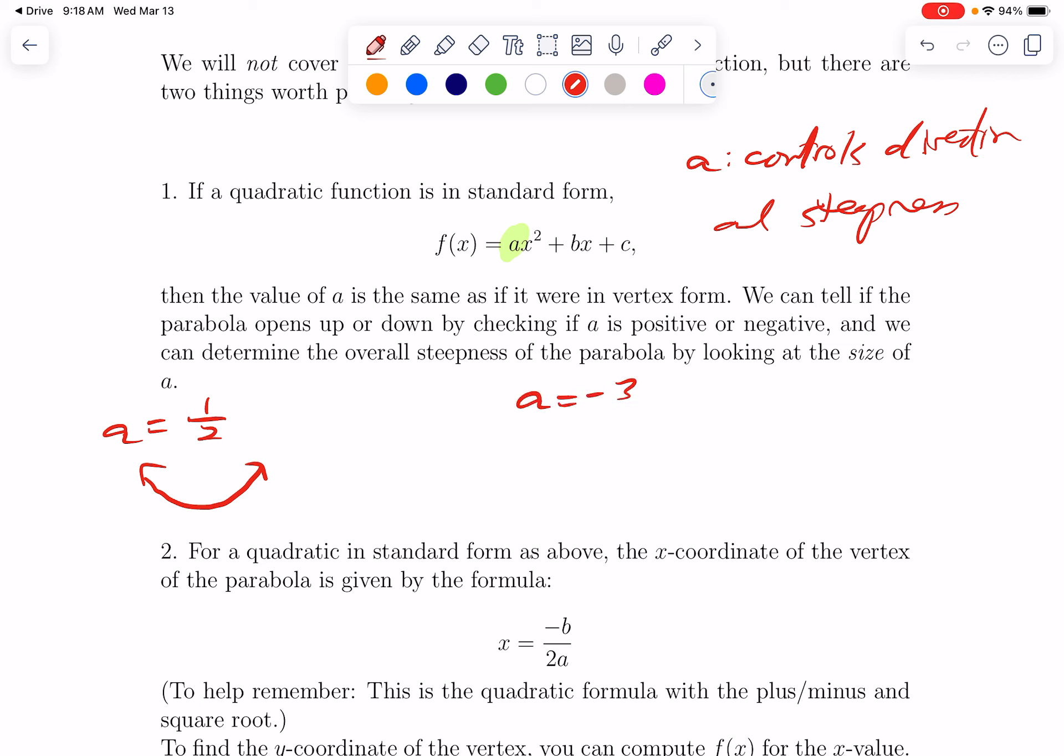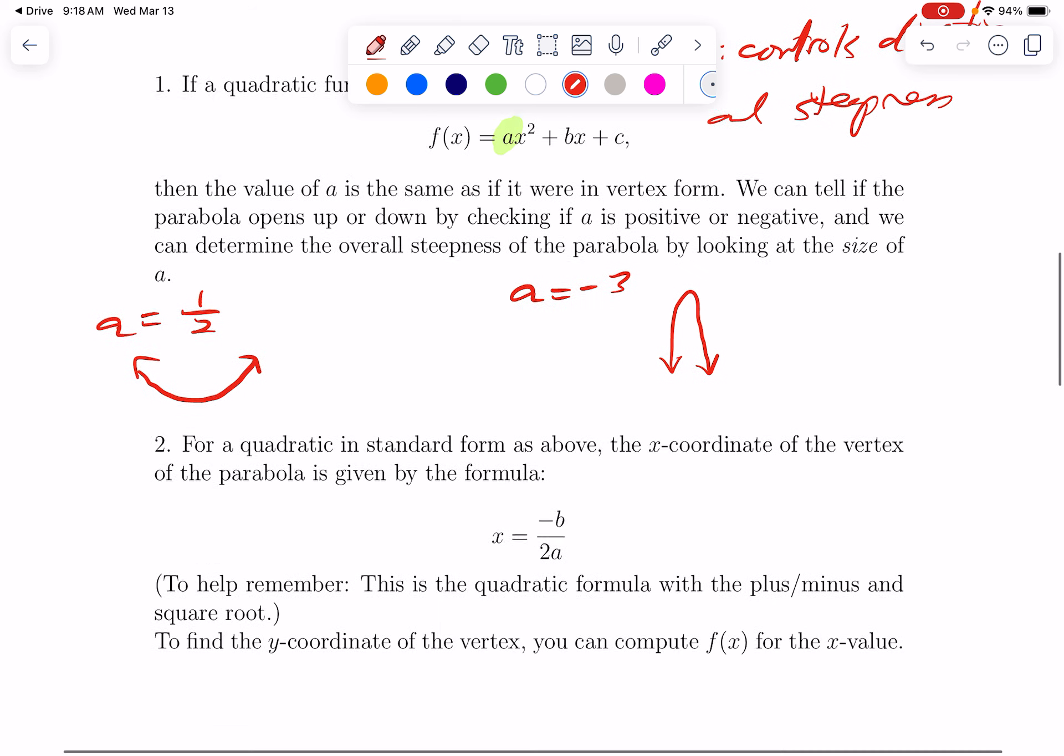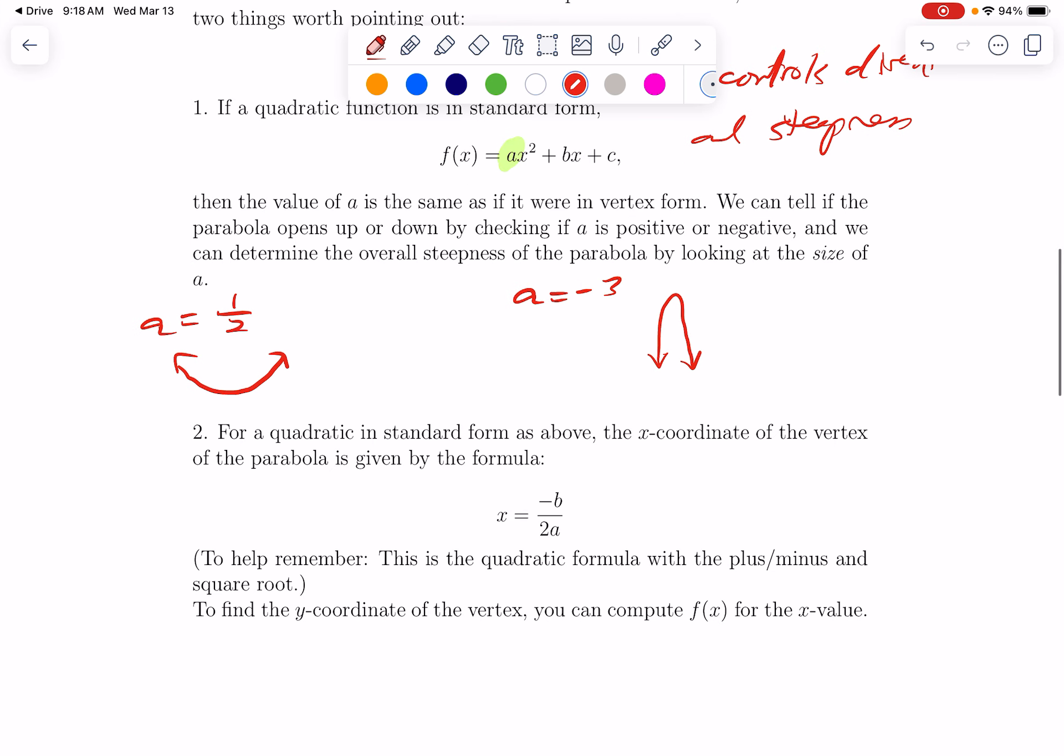But if a is negative 3, that means it opens downward, it's quote-unquote upside down, and it's steeper than normal x squared. Exactly how to get that steepness just from drawing or looking at a graph is nearly impossible, but intuitively we have a vague sense that some parabolas are steeper than others. Now here is another thing worth knowing, and this is, we really just want to know this.